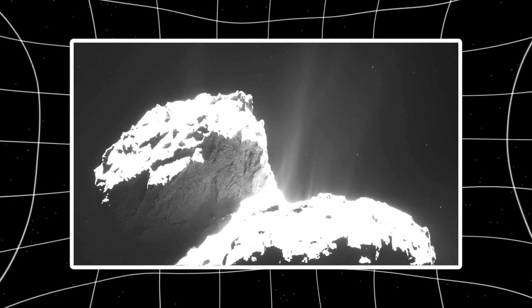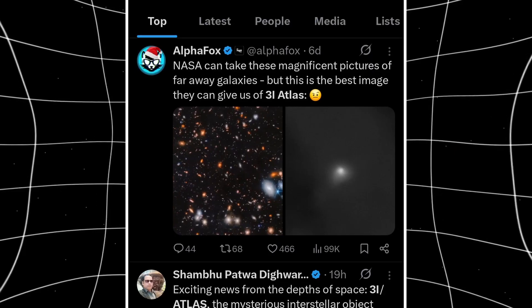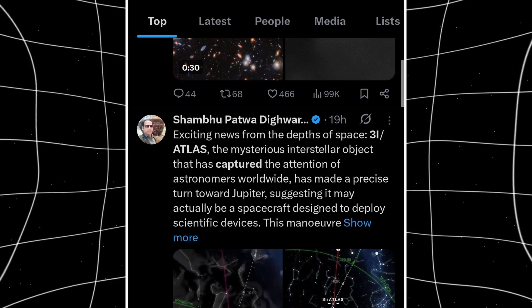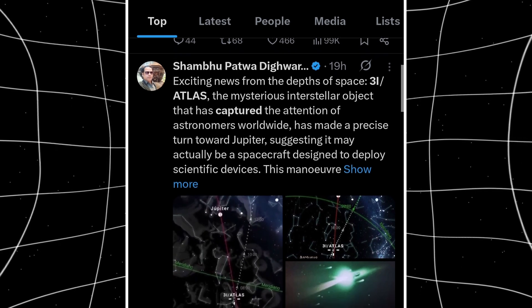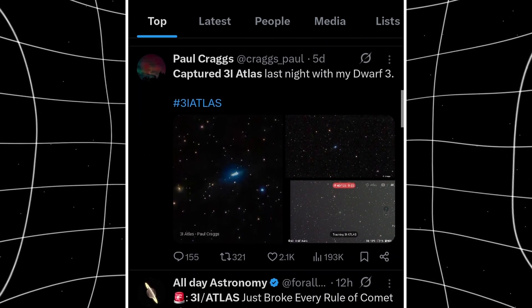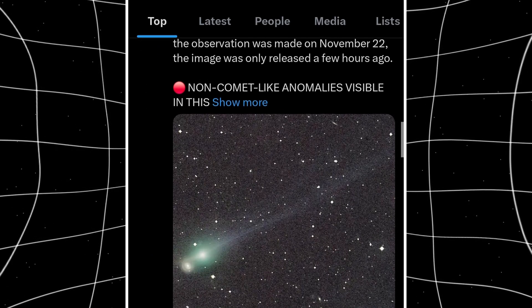NASA says it's solar radiation pressure pushing dust. Geometry projecting it into our line of sight in a way that looks like thrust but isn't. Mathematically, that works. Visually, it looks exactly like a jet. A controlled vent. A nozzle firing in one direction with surgical precision.